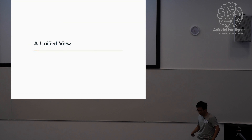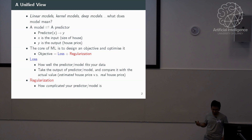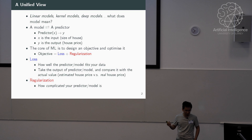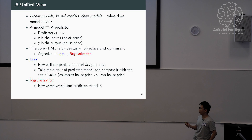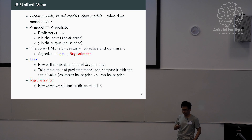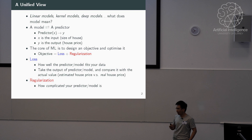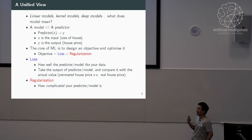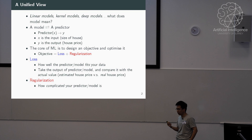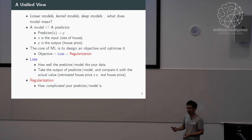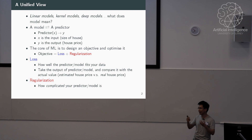First, I'd like to present a very unified view about machine learning models. We have a lot of names — linear models, kernel models, deep models, neural networks, support vector machines. What's behind all those names? When we really say a machine learning model, we usually mean a predictor. A predictor is something like you feed it some data and it will output another kind of data.